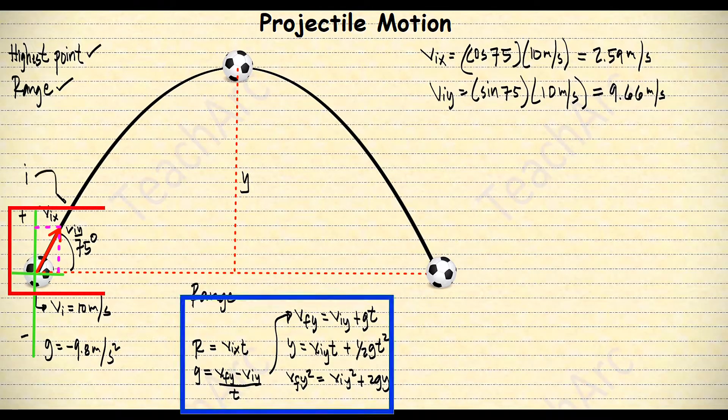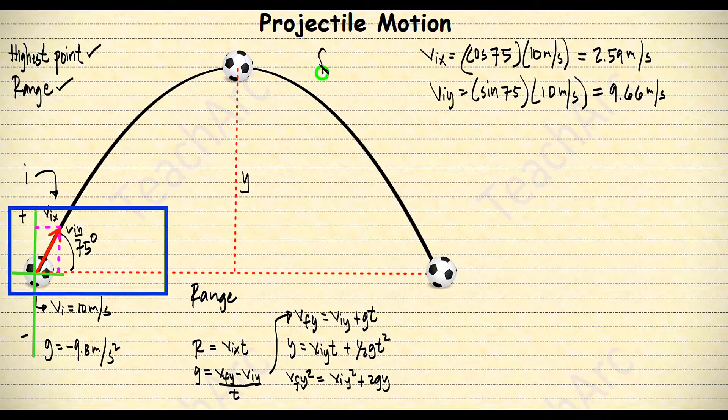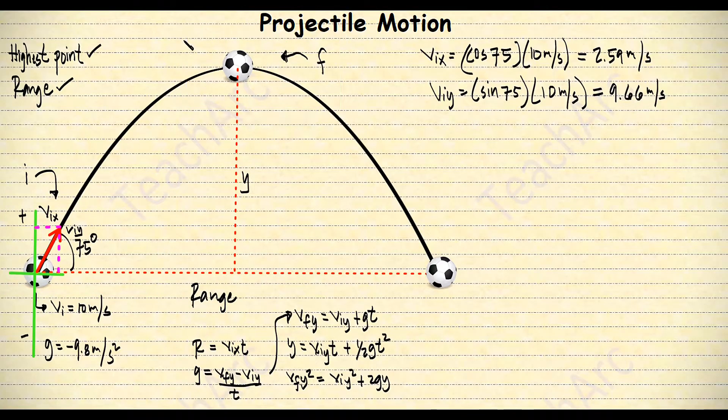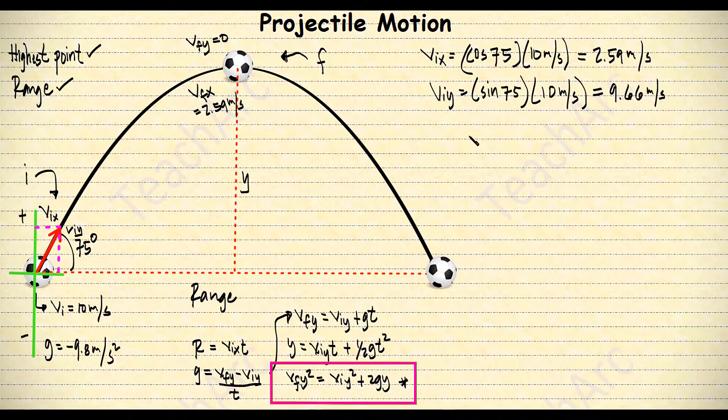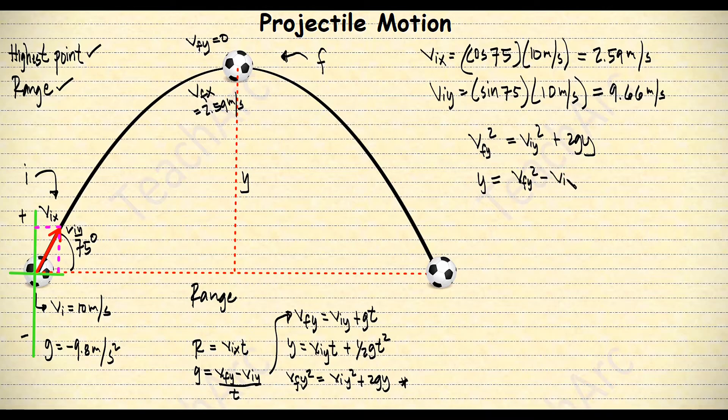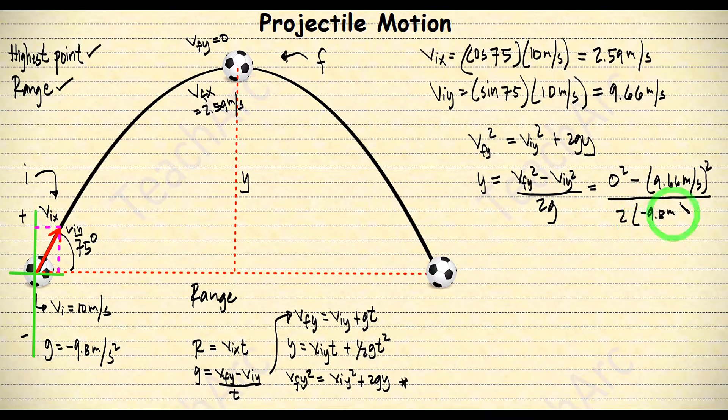If I choose the beginning of the motion as the initial and at the highest point as the final, then I know that at the highest point, the y component of the velocity at this point is 0. The x component is the same, 2.59 meters per second. So this formula right here seems the easiest to use to solve for the height. Simple algebra will help us isolate what we need to solve. And plugging all the given, we will get 4.76 meters as the maximum height.